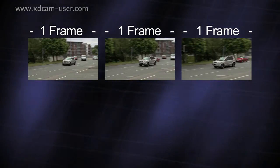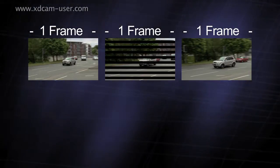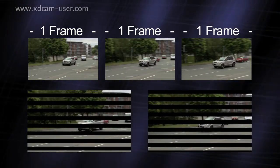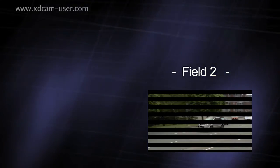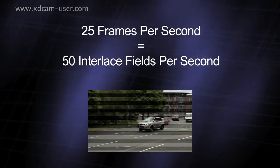An interlaced frame is split into two fields. These are recorded one after the other, so a 25 frames per second interlaced video sequence is actually updated 50 times a second, hence the term 50i.